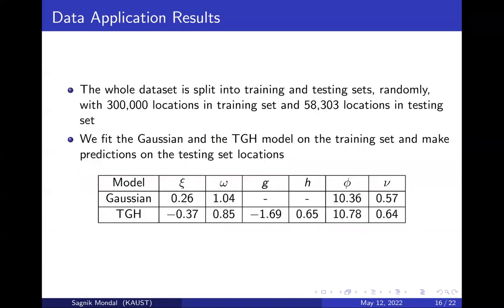We present results from our data application. We split the Germany dataset into training and testing sets randomly; the training set consists of 300,000 locations and the testing set consists of the remaining 58,303 locations. The estimated parameter values are presented in a table. The estimated values of G and H are far from zero, suggesting that the Gaussian fit is not appropriate for this dataset.